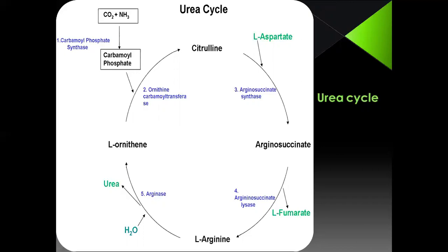Carbamyl phosphate synthetase catalyzes this reaction, which consumes around two ATP molecules. In the second step — formation of citrulline — in the presence of ornithine carbamyl transferase, the amino acid ornithine (already present in the mitochondria) combines with carbamyl phosphate. The carbamyl phosphate transfers its carbamyl group to ornithine, resulting in the formation of citrulline.